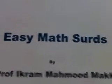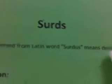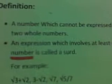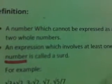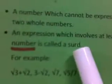First, what is a SURD? SURD is derived from the Latin word 'surdis' meaning deaf, mute. Definition: a number which cannot be expressed as a ratio of two whole numbers. Another definition of SURD is an expression which involves at least one irrational number is called a SURD.